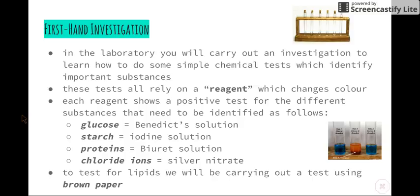So the reagents that we'll be using are Benedict's solution, which is a reagent that will tell us whether glucose is present or not. Iodine solution tells us whether starch is present or not. Biuret solution for proteins. And silver nitrate solution for chloride ions.